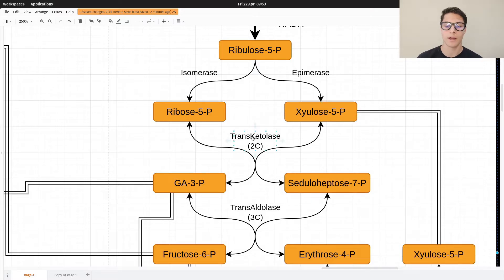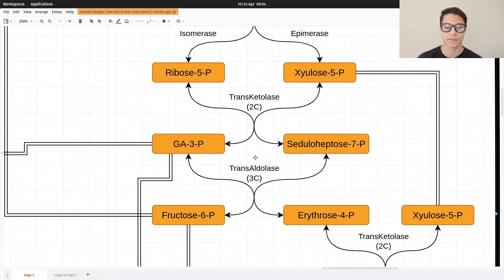How many carbons? Two in this case. Remember the keto group is on carbon number 2, so that's a little mnemonic to remember. Transketolase.